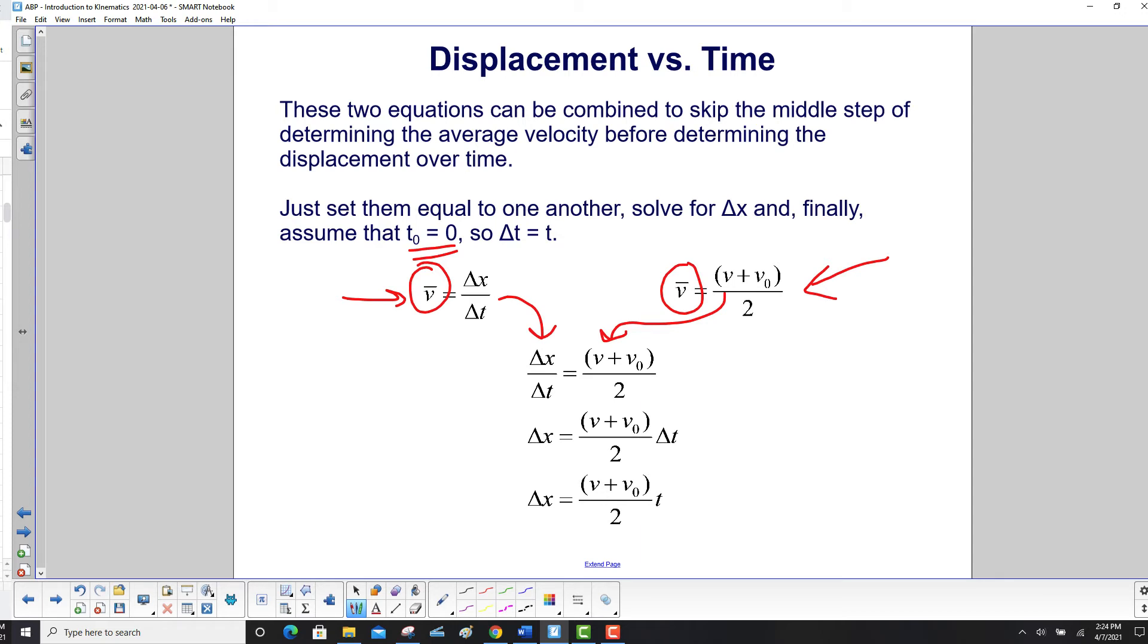First thing, multiply both sides by Δt. That clears the Δt on the left side. And then we replace Δt with just t. So here's our final working equation here.